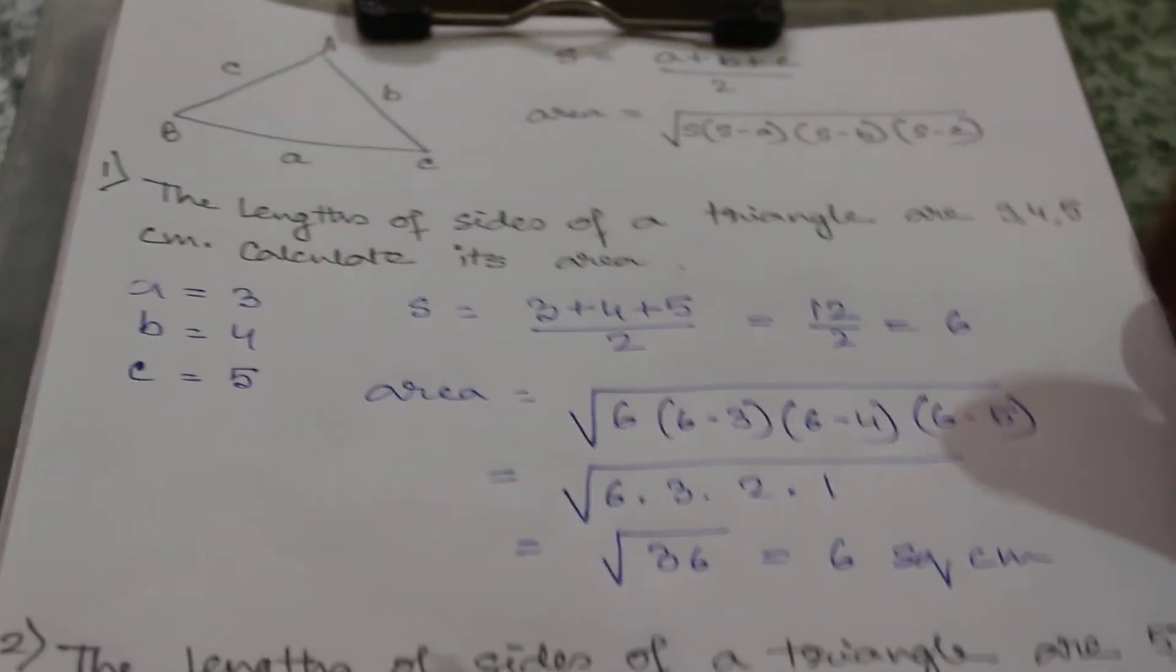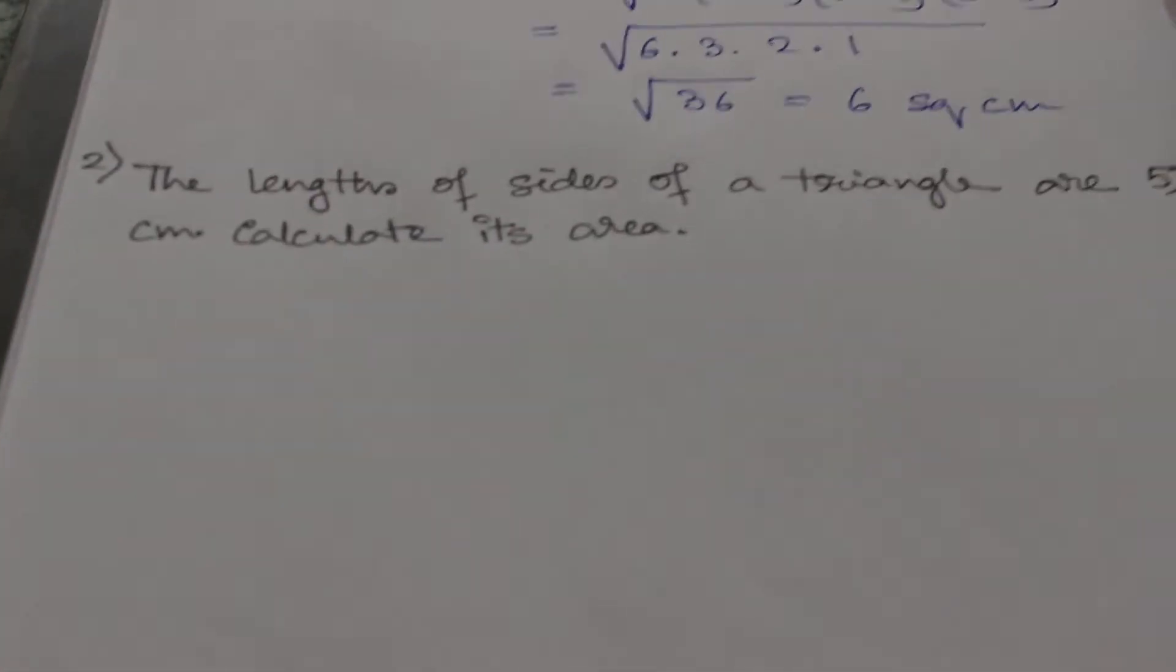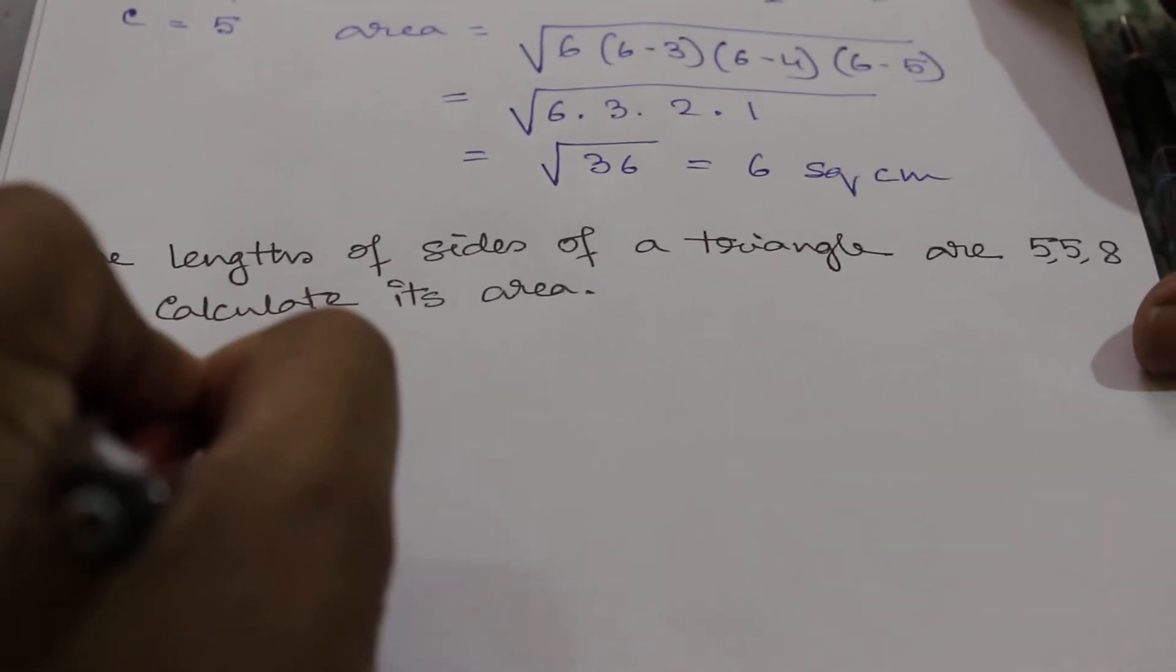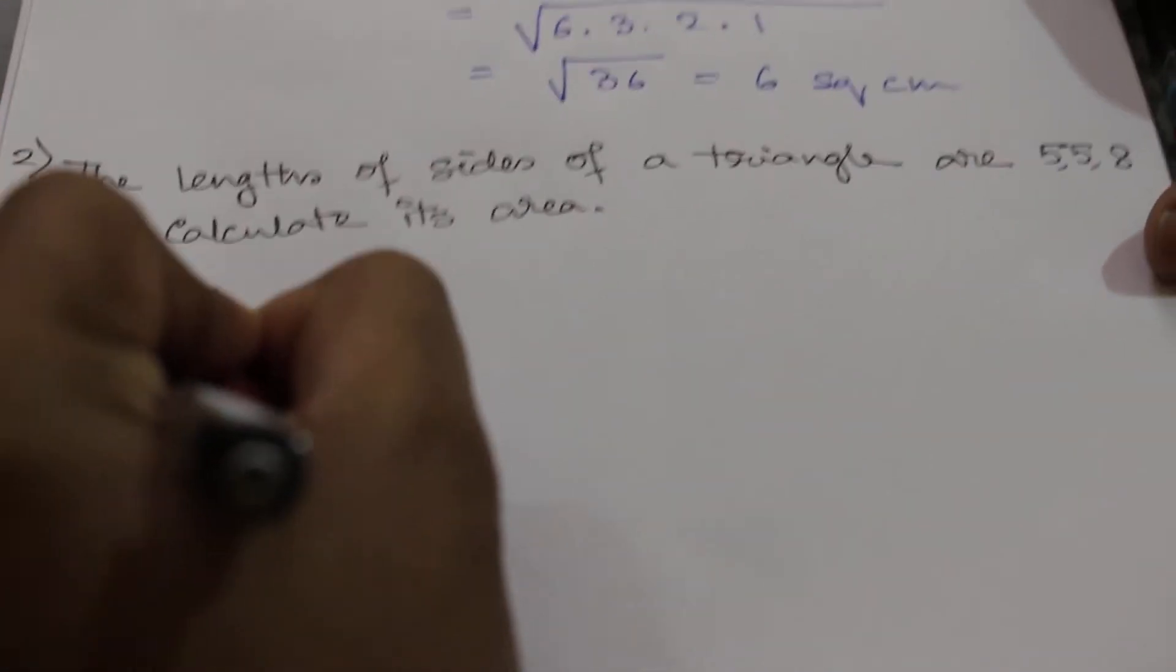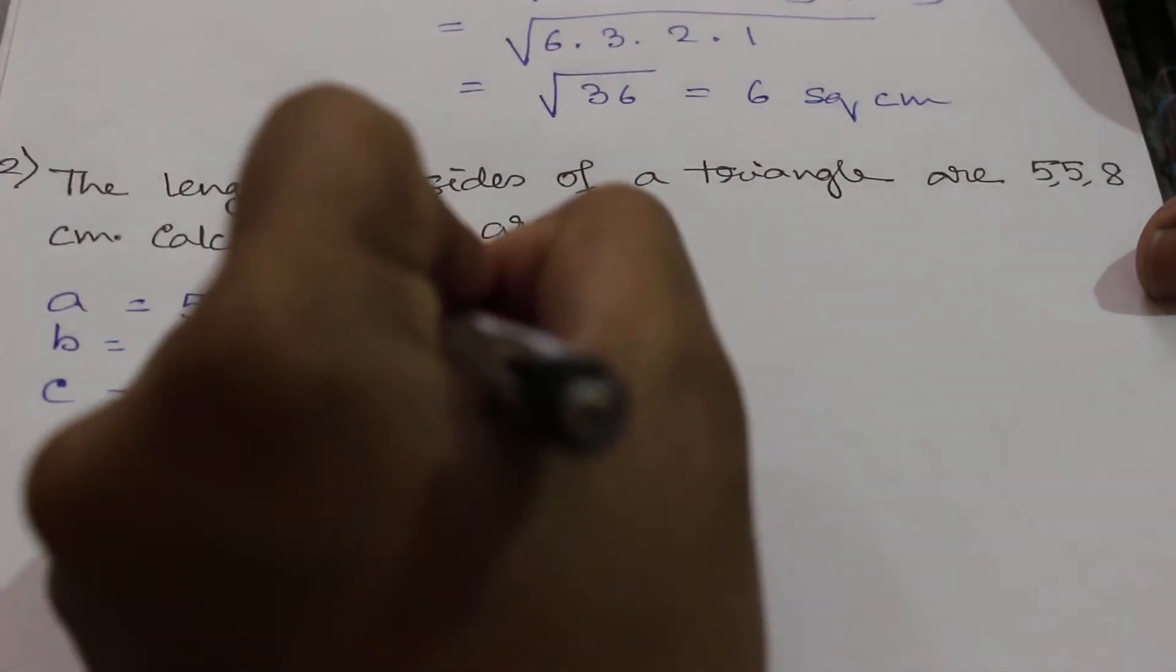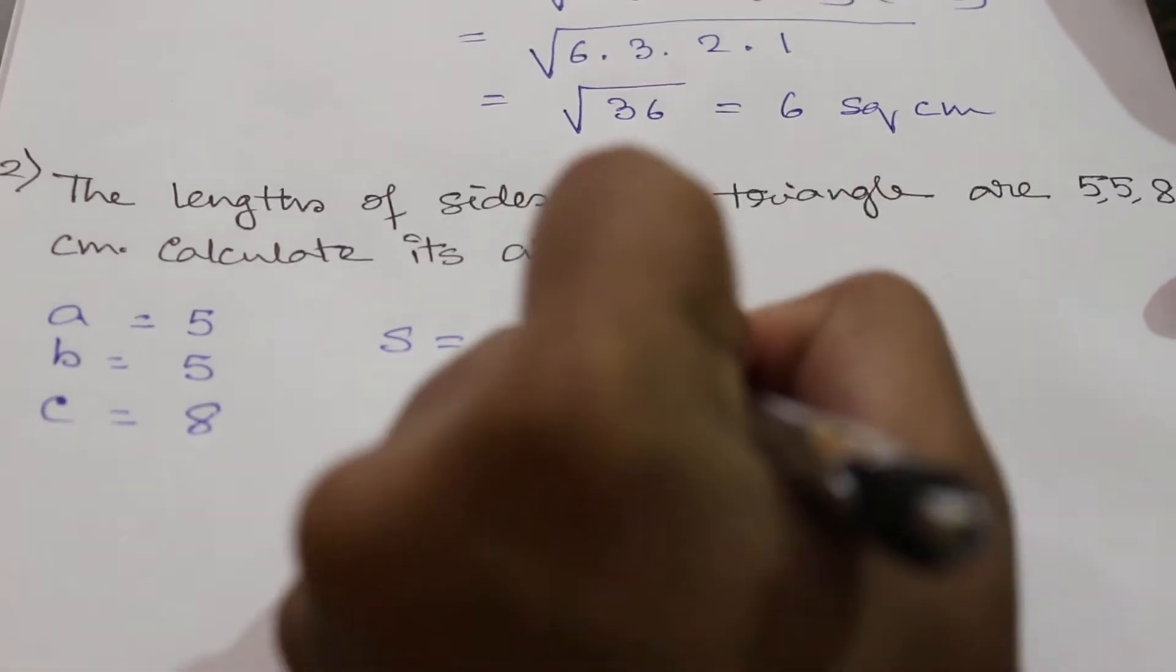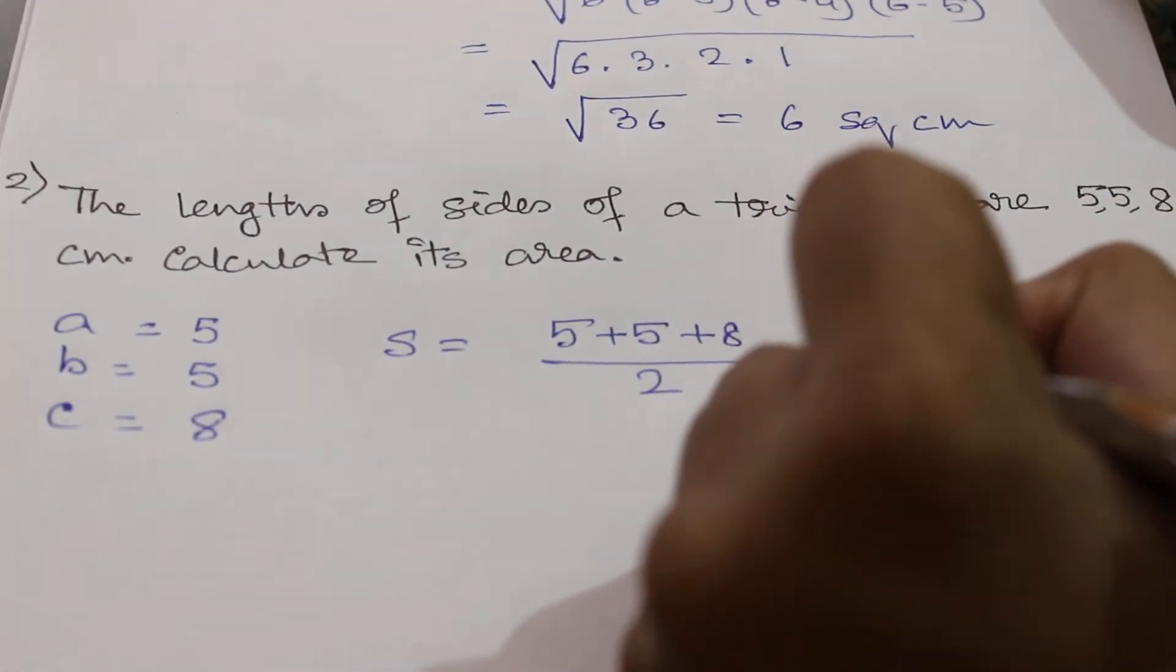Next example: The length of sides of a triangle are 5, 5, 8 centimeters. Calculate its area. So a is 5, b is 5, c is 8. So s equals (5+5+8)/2, the half perimeter, which equals 9.